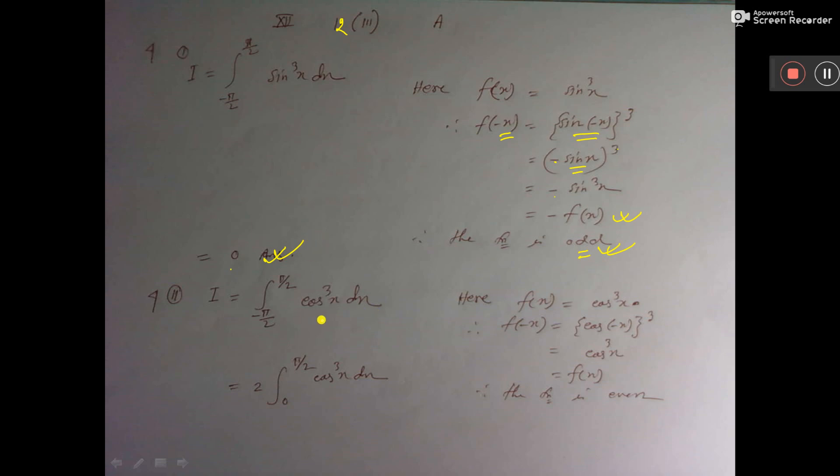Now second one you consider this is equal to i. Again you test. The function is odd or even. So in place of x you put minus x. Here also minus x.